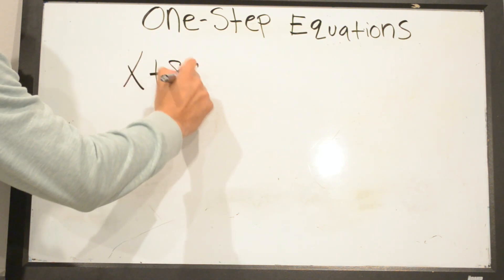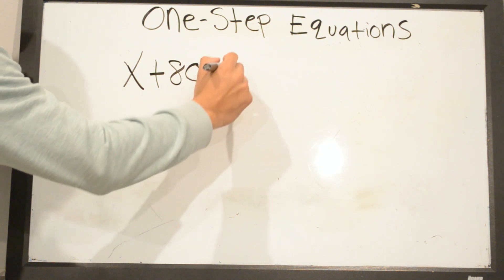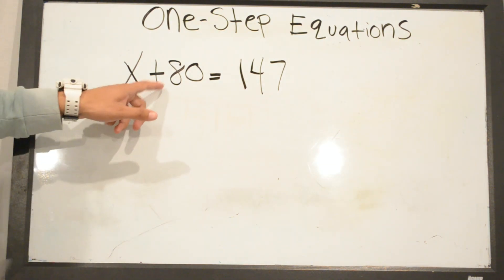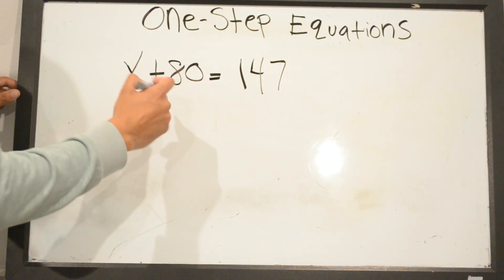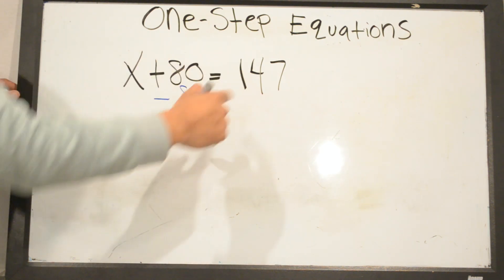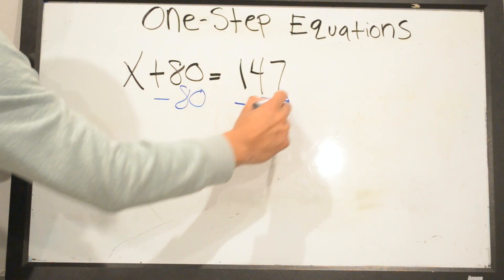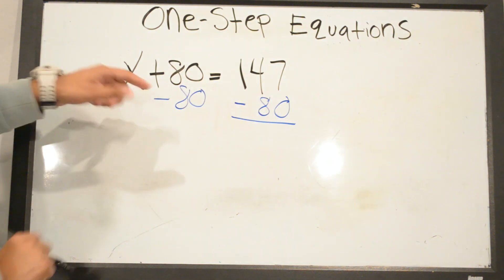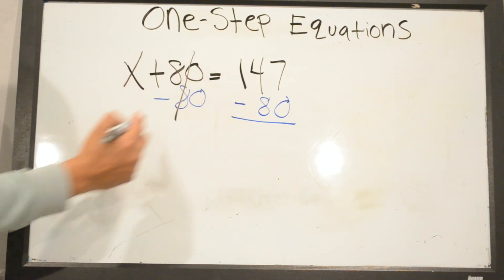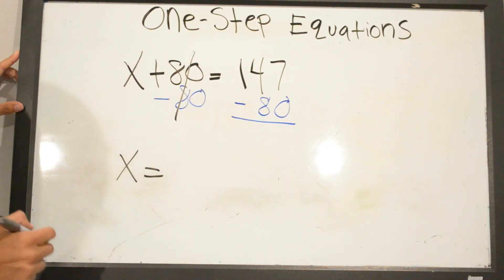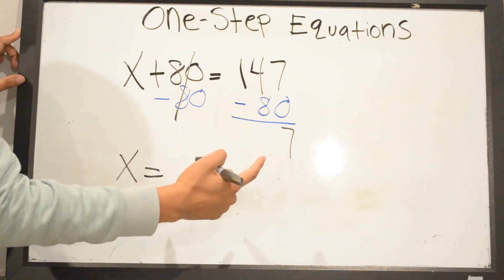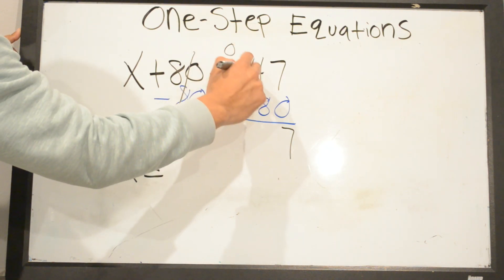X plus 80 equals 147. To get rid of positive 80, the opposite of positive 80 is negative 80. Whatever we do on one side of the equal sign we always have to do it on the other side. Positive 80 minus 80 cancels, leaving X by itself. 7 minus 0 is 7; 4 minus 8 — you can't, so you have to borrow.